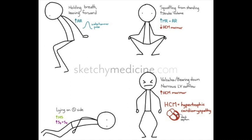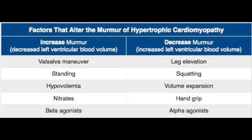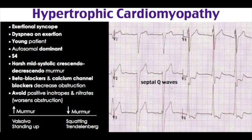For decreased murmur intensity, increased venous return — squatting, supine, leg raise — and increased afterload such as hand grip preserve LV outflow. They may also have a loud S4, mitral regurgitation, S3, or pulsus bisferiens. On echo: asymmetric ventricular wall thickness — especially septal wall 15mm or greater — systolic anterior motion of the mitral valve, and small left ventricular chamber size. EKG shows LVH, anterior-lateral-inferior pseudo-Q waves, and enlarged atria.